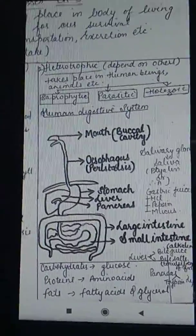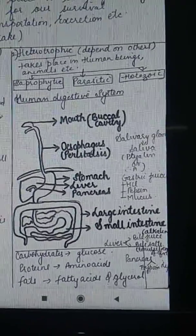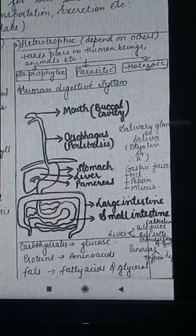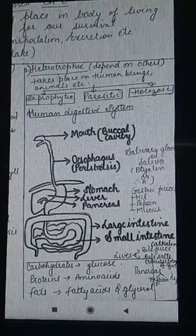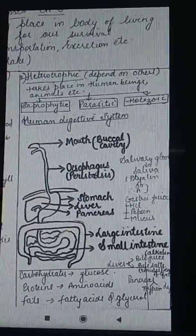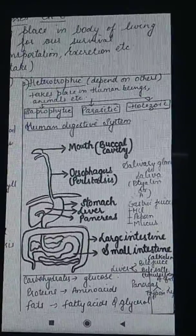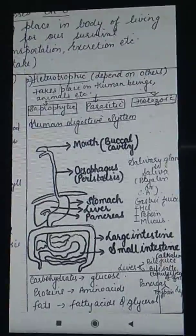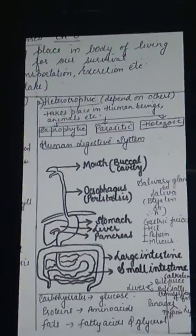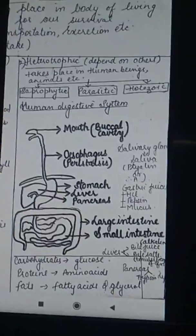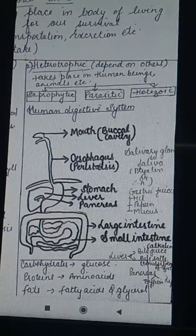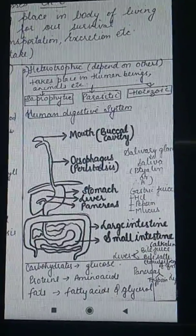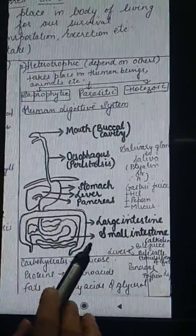Diphyodont means that in our life we have two kinds of teeth. The first are temporary teeth, also called milk teeth, which begin coming in after six to eight months of birth. After six to seven years of age, these temporary teeth fall off and we get the main permanent teeth.